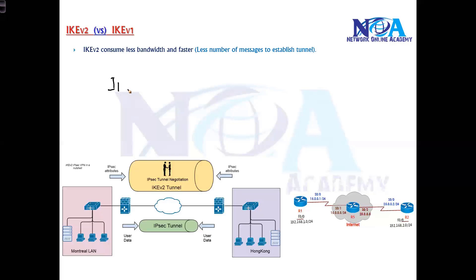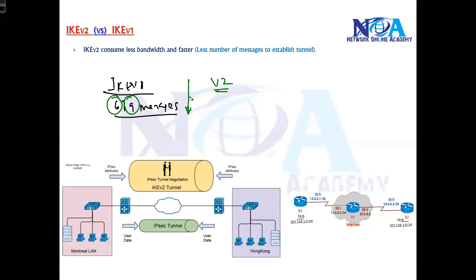In IKE version 1, we have either six or nine messages depending on the mode — aggressive mode uses six messages and main mode in phase 1 uses nine messages. Whereas in IKE version 2, all these messages are combined into just four messages, making the process much faster and consuming very less bandwidth.